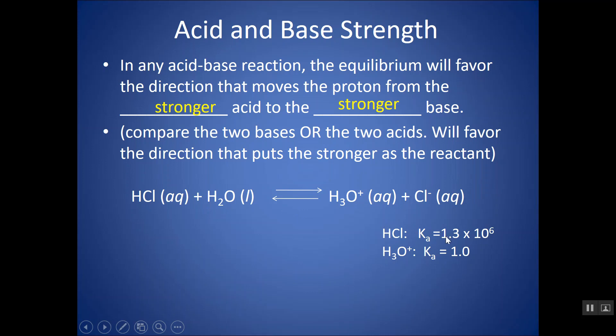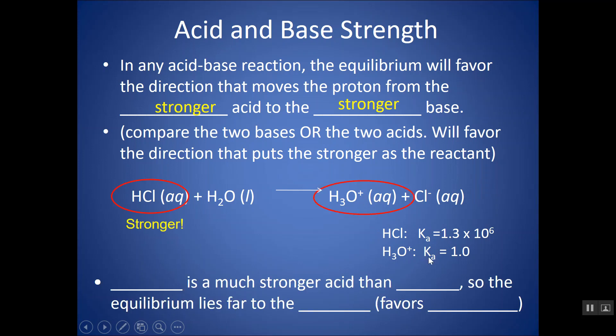HCl, here's my Ka, it's much bigger than that of the other acid, H3O+, so it's going to favor going to the right. It's going to favor HCl transferring the proton to the H2O and turning into products.